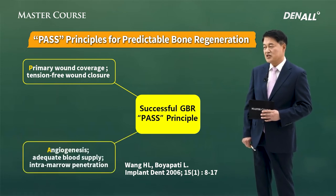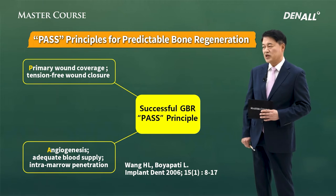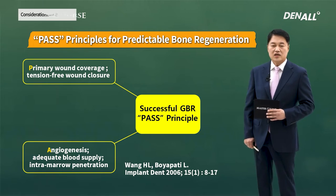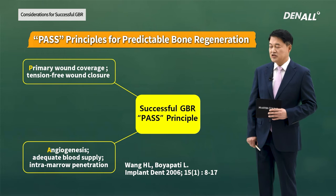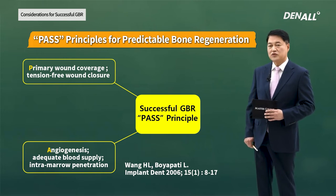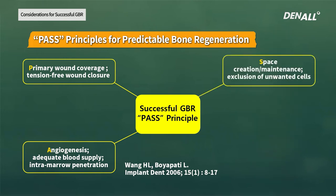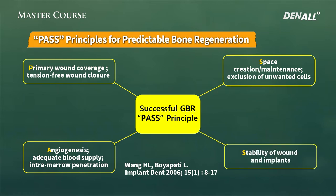A stands for angiogenesis — adequate blood supply is necessary, and if necessary, intramarrow penetration should be conducted. The first S stands for space creation and maintenance, and exclusion of unwanted cells. The second S stands for stability of wound and implants.